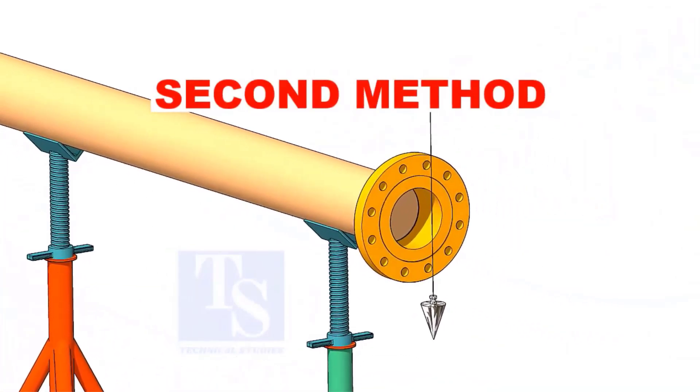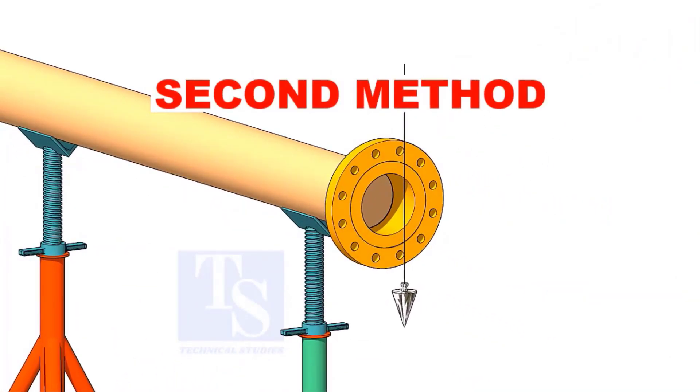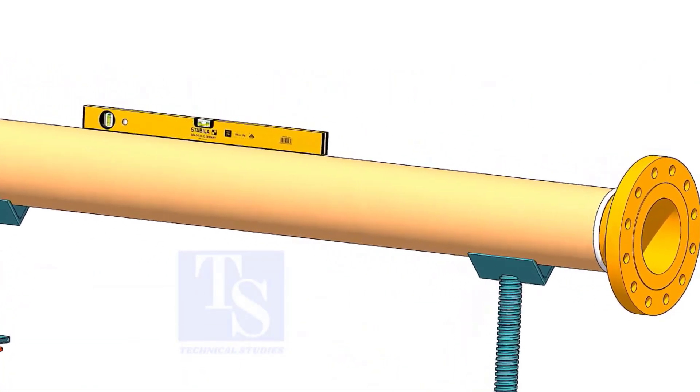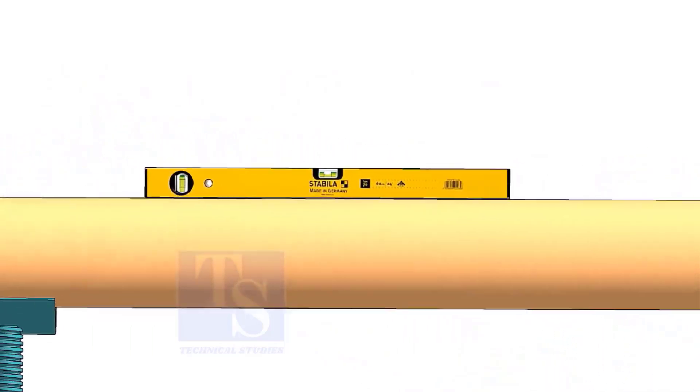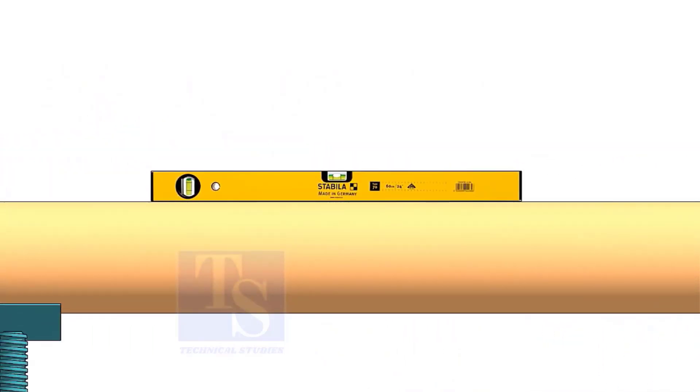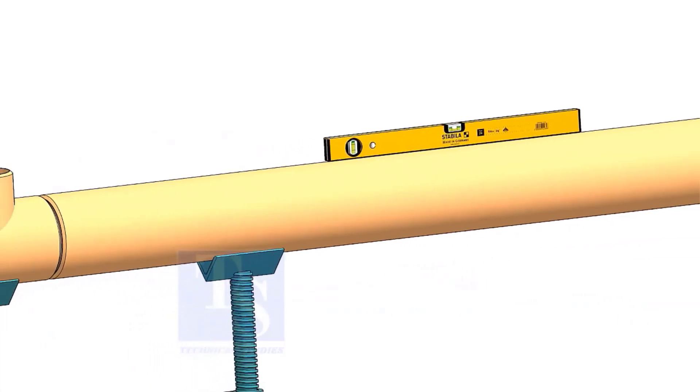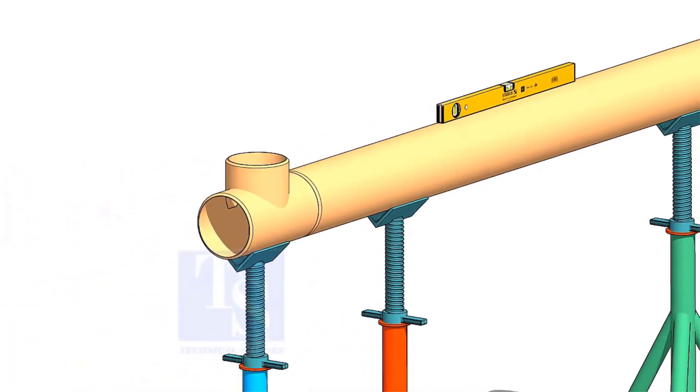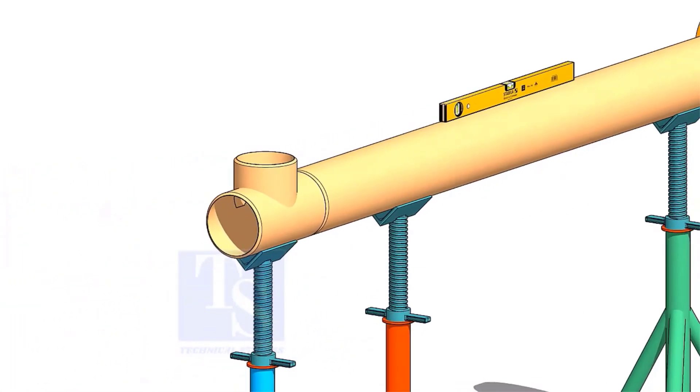Correct the flange plumbness. Level the pipe. Fix the clamp. Put the tee on the support and put the gap rod.